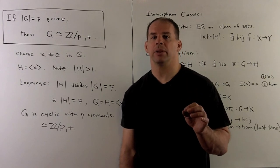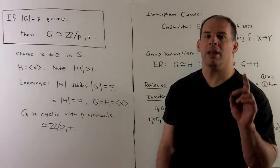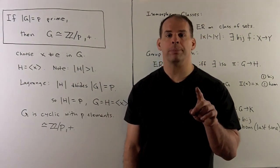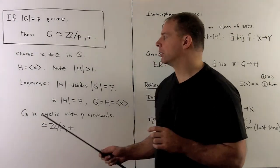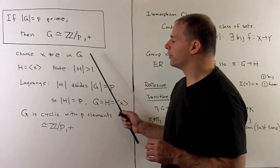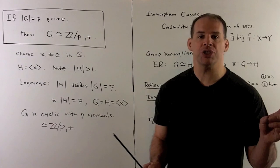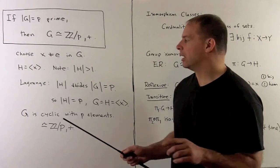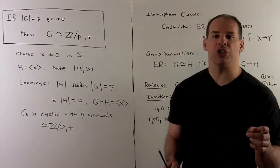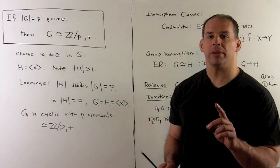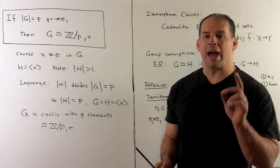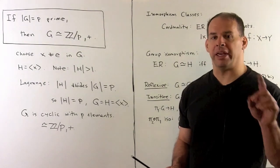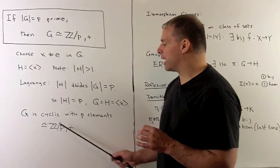An immediate consequence: if the order of G equals p, a prime, then G is isomorphic to Z mod p under addition. Note this is an assumption only on the order — we get abelian and cyclic for free. We choose any element x not equal to the identity in G, and let H be the subgroup generated by x. The order of H is greater than 1. By Lagrange's theorem, the order of H divides the order of G, so it divides p — meaning it's 1 or p. Since it's greater than 1, the order of H equals p. So G equals H, G is generated by x, and G is cyclic with p elements — hence G is isomorphic to Z mod p.